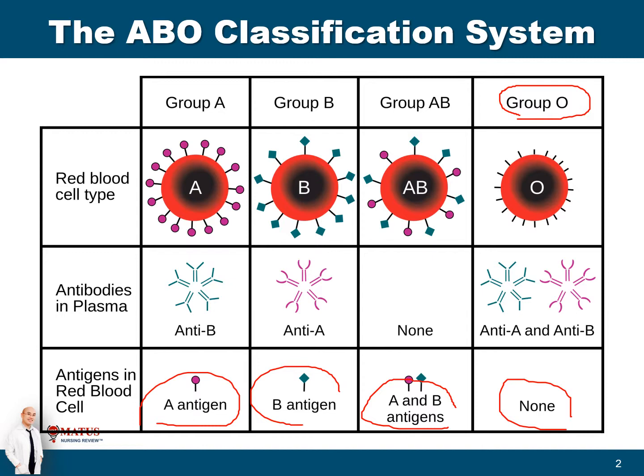Type B has antibodies against A, and type A has antibodies against B. So it follows that when the patient is type A, you can give type A only or O. For type B, you could give type B or O. For type AB, you could give everything because it has no antibodies. But for type O, you should only give O because it has antibodies for both A and B.